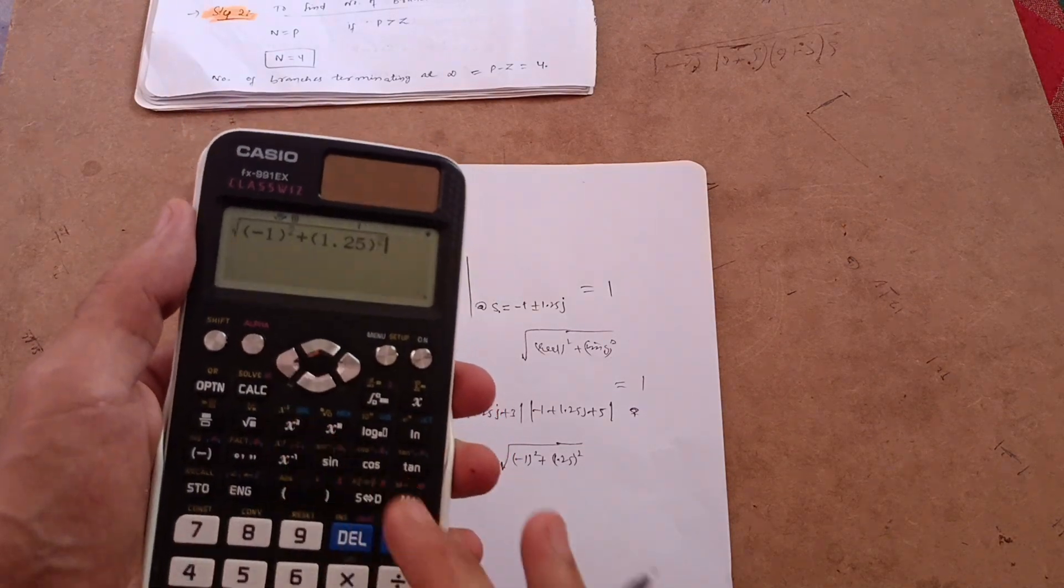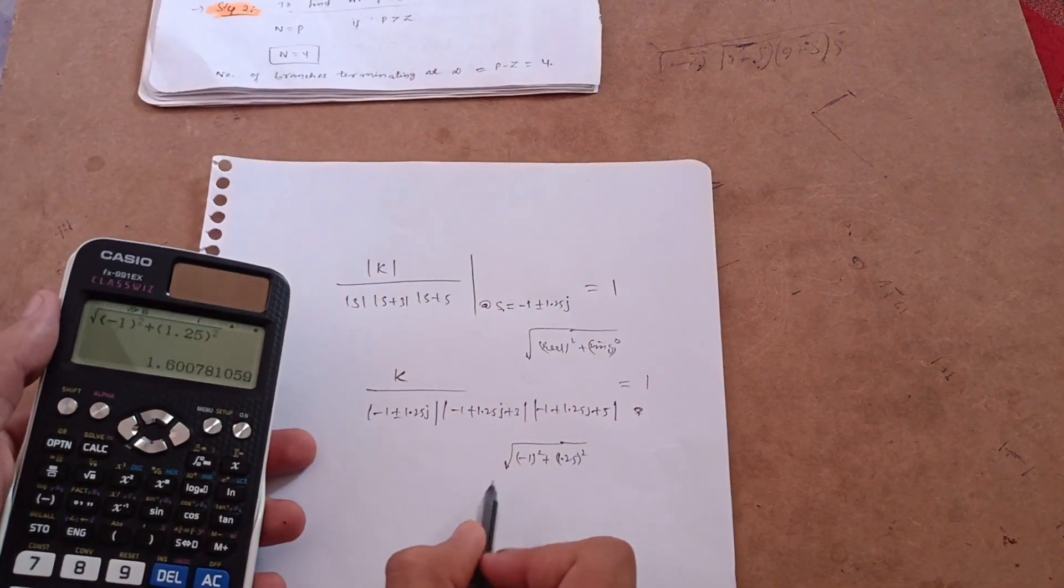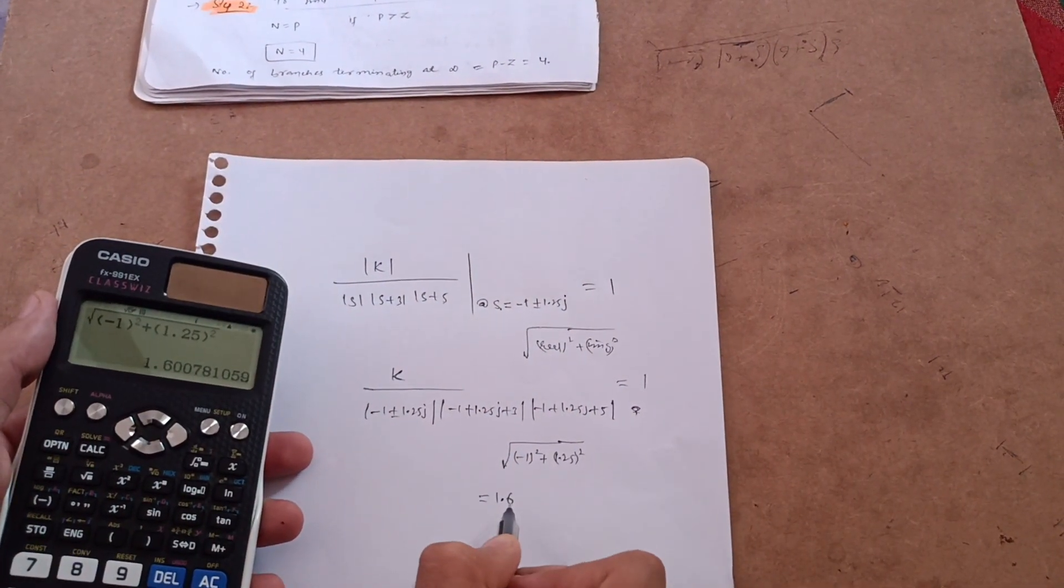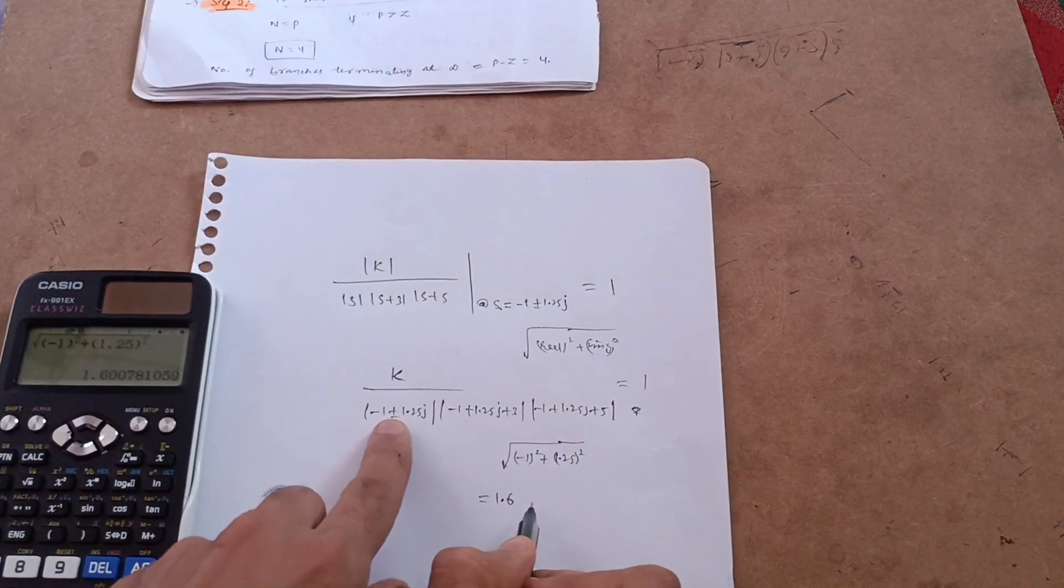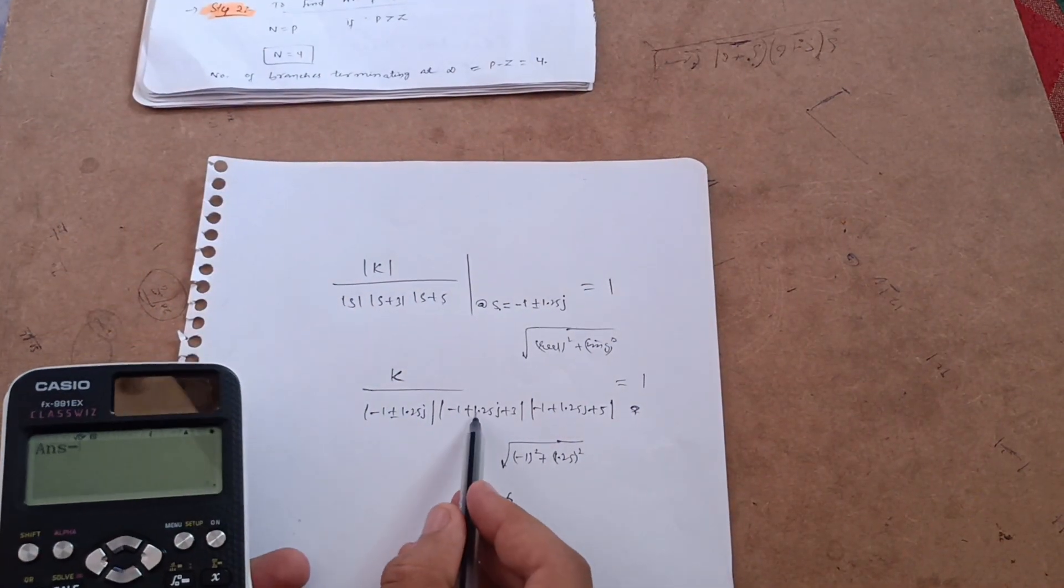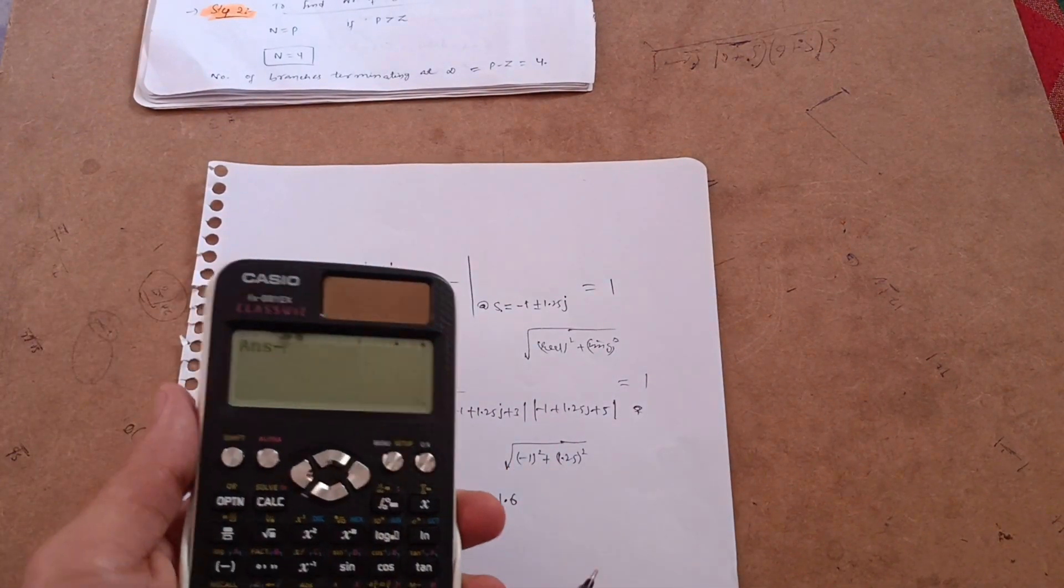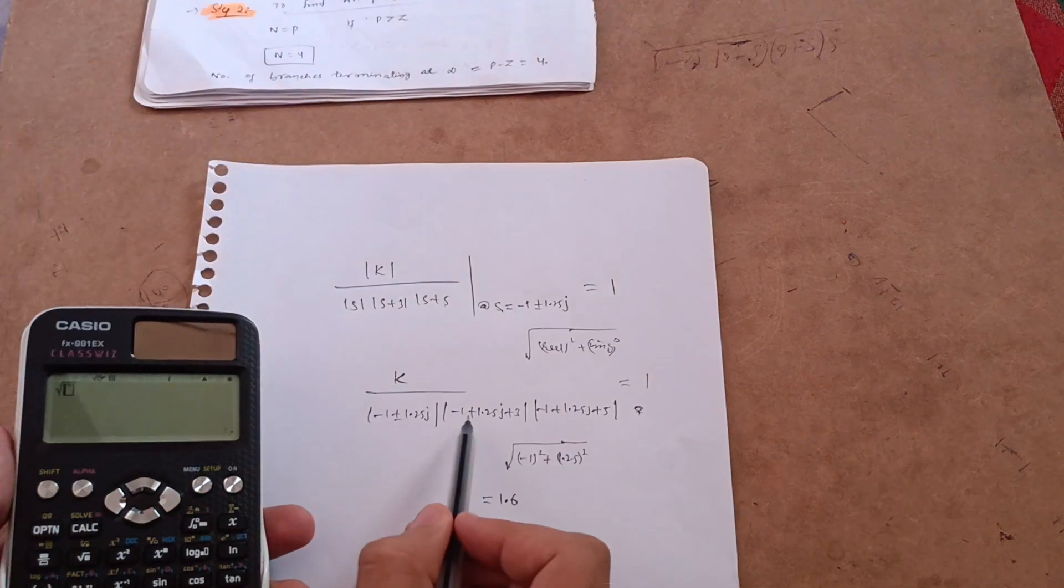Which is equal to 1.6 over here. This is the first term, the magnitude of the first term. Then another term, that is minus 1 plus 1.25j plus 3. So 3 minus 1 is 2, so I can write directly under root of what is the real part, that is 3 minus 1 is 2.